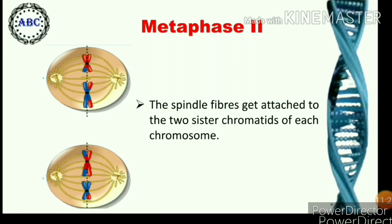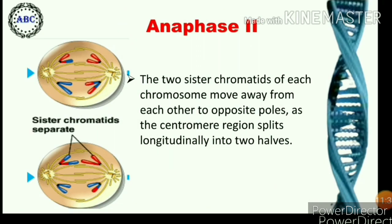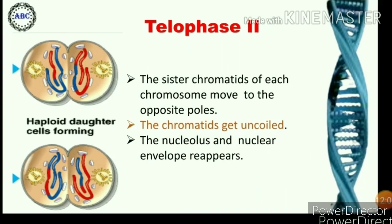The chromosomes are arranged at the equatorial plate. During anaphase second, the two sister chromatids of each chromosome move away from each other to the opposite poles as the centromere region splits longitudinally into two halves. Only half chromosomes — individual chromatids — move to the pole instead of a complete chromosome. The sister chromatids of each chromosome move to the opposite poles and the chromatids start to uncoil.